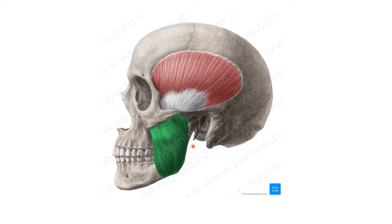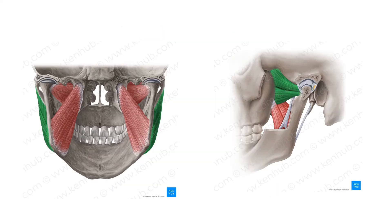Both the temporalis and masseter muscles are supplied by the mandibular branch of the trigeminal nerve. Next we have the medial pterygoid and lateral pterygoid muscles.